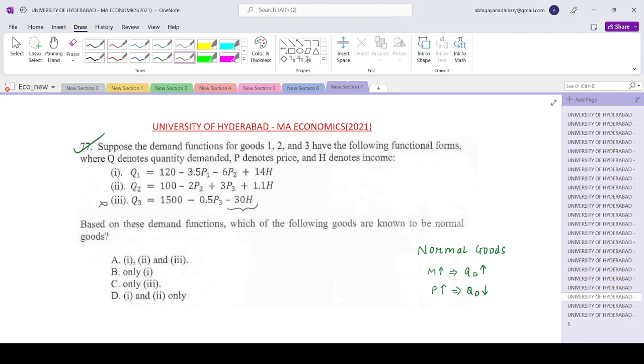Now coming to number 1. Check over here that the coefficient of P1 is negative. That means if P1 increases, Q1 will fall. So that is correct. And the coefficient of H is positive. So if H increases, Q1 increases. That means this is normal good. So this is normal.